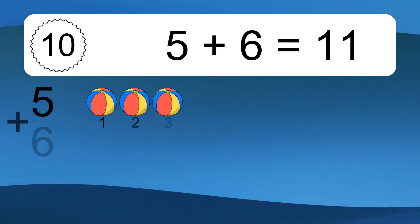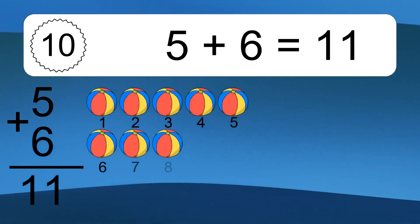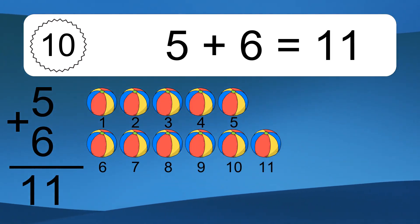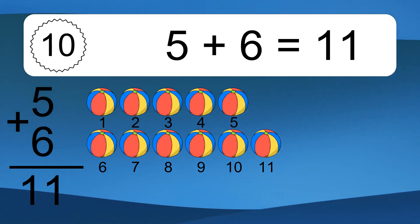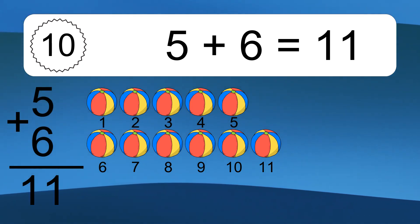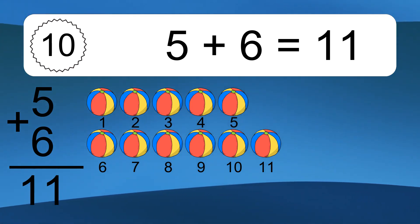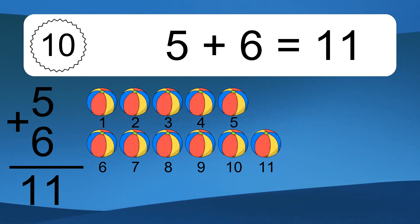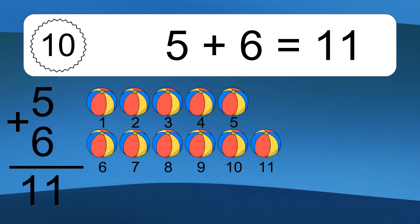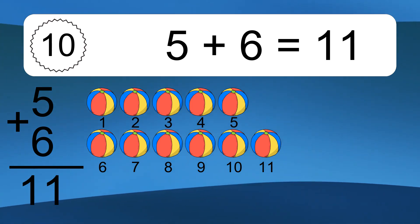5 plus 6 equals what? 5 plus 6 equals 11. Let's count it. 1, 2, 3, 4, 5, 6, 7, 8, 9, 10, 11.